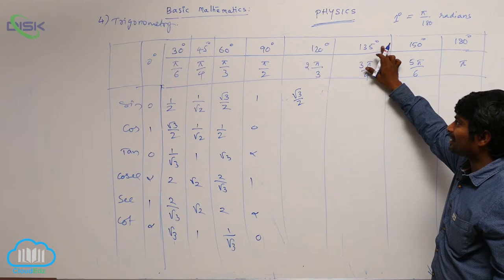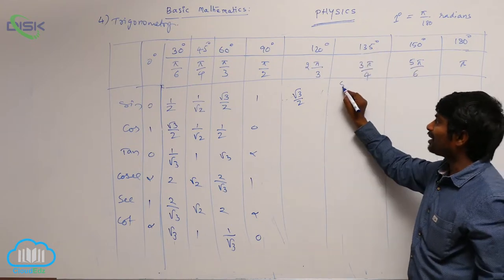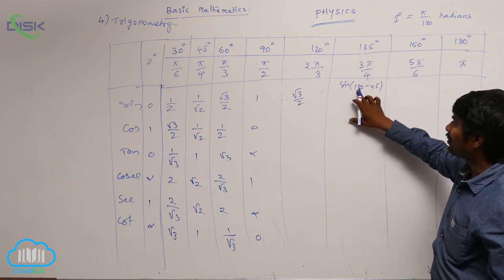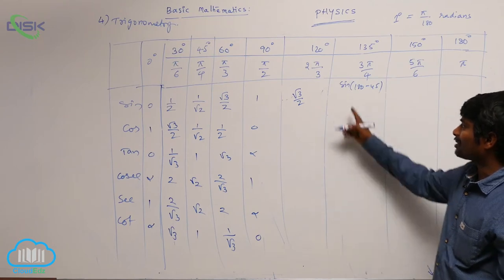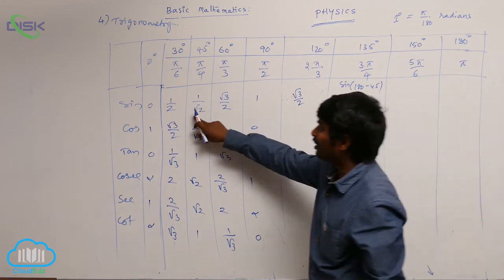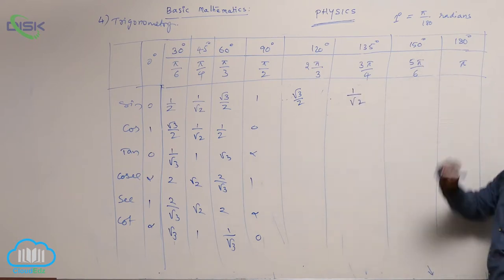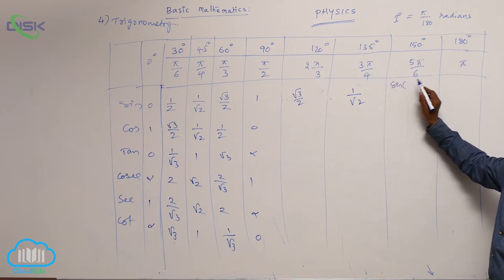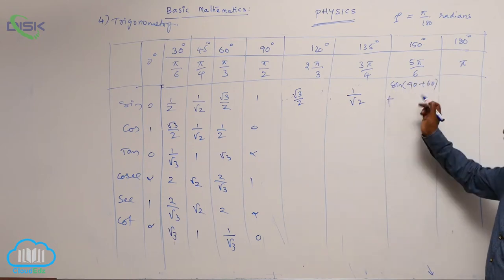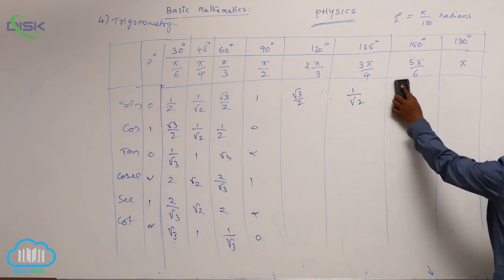For 135 degrees, we can write it as 90 plus 45 or 180 minus 45. Taking 180 minus 45, it is in the second quadrant so sin is positive, and for 180 the function stays the same, giving sin 45, which is 1 by root 2. For sin 150, writing as 90 plus 60 in the second quadrant, sin is positive and we get cos 60, which is 1 by 2.